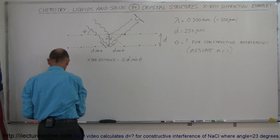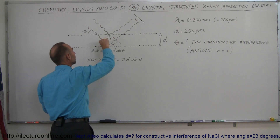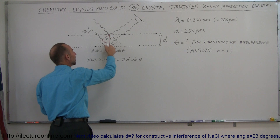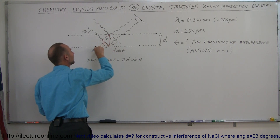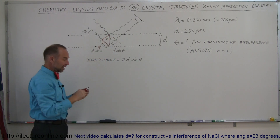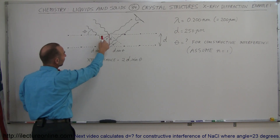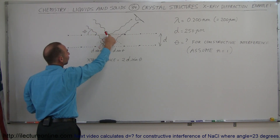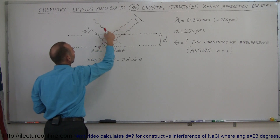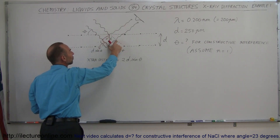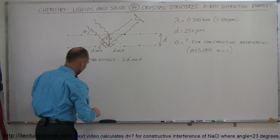Think of this as a right triangle — I can use some different colors to indicate that. Here's our right triangle: there's theta, there's the opposite side of theta, so this side is equal to D sine theta — the hypotenuse times the sine of theta. That's the extra distance traveled for one wave. This wave continues the same distance again, which is also D sine theta.